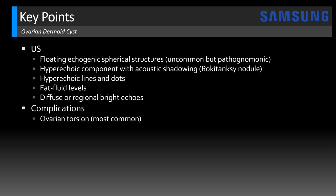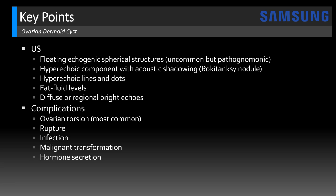Complications for dermoid cysts: by far the most common is ovarian torsion, just like any large mass increases your risk of torsion. All other complications are much less common. Sometimes these can rupture and cause peritonitis. There can also be superinfection with abscess formation. Rarely, in 1-2%, there can be malignant transformation — most commonly seen in the postmenopausal age group with degeneration into squamous cell carcinoma. There can also sometimes be hormone secretion; for example, hyperthyroidism can occur if thyroid tissue is deposited in the mass. And what's that known as when you have thyroid tissue deposited in the ovary?